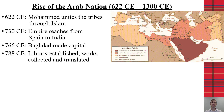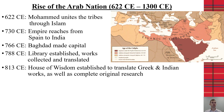Around 766 they established Baghdad as the capital, and also established a library where the conquered nations' works were collected and placed. Around that same time they created the House of Wisdom, which allowed the scholars of the Arab nation to come together, take those works, translate them, and then expand upon them, greatly improving knowledge of algebra, geometry, and beyond.